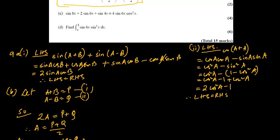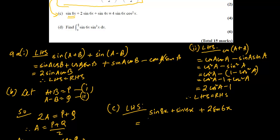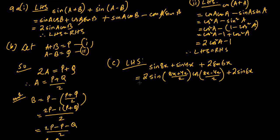Question C requires proving another identity, and since trigonometric identities build on each other like a story, we'll use the previous result. The left hand side is sine 8x + sine 4x + 2 sine 6x. Treating sine 8x as sine P and sine 4x as sine Q, and applying sin P + sin Q = 2 sin((P+Q)/2) cos((P−Q)/2): with P=8x and Q=4x, (P+Q)/2 = 6x and (P−Q)/2 = 2x.